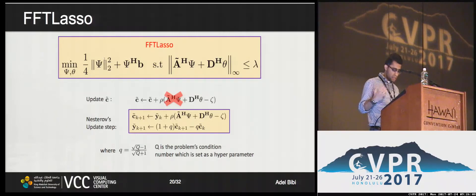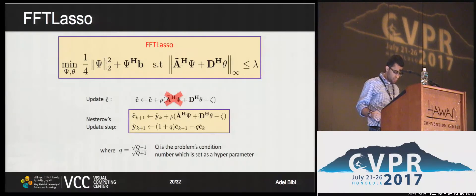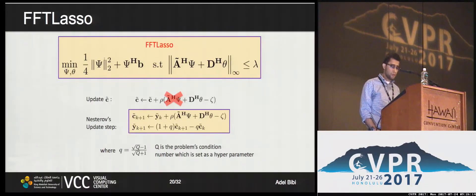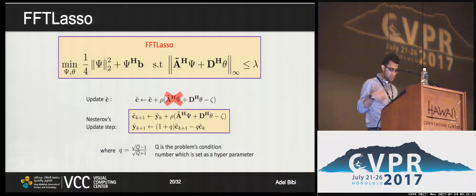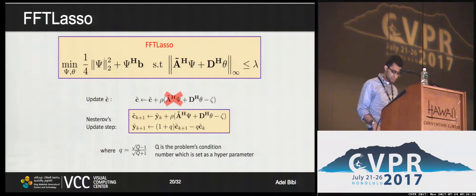The dual variables of the dual problem are the primal variables, so TC̃ is in fact the lifted sparse codes. They are often updated with a standard dual ascent step. However, in FFT-Lasso we solve the problem with a Nesterov-like update to improve convergence, where Q is related to the condition number but is set as a hyperparameter throughout the experiments. Upon convergence, the final solution C can be obtained simply by downsampling C̃.